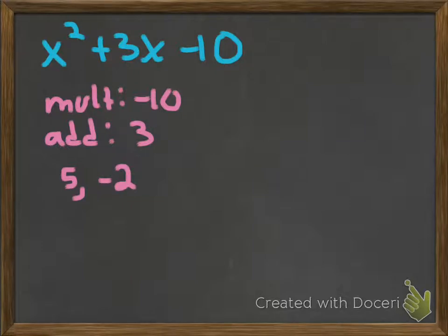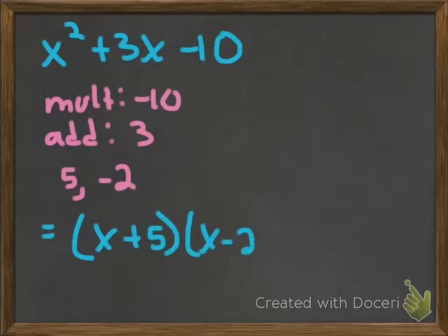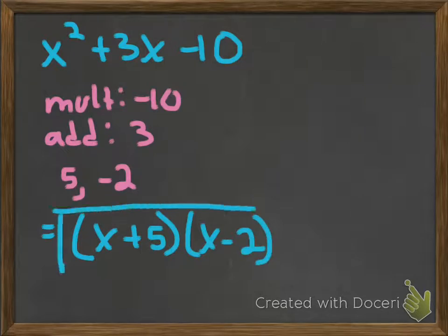It looks like 5 and negative 2 are the numbers that work in this example. They multiply to negative 10 and add to positive 3. So my factored version is x plus 5 times x minus 2. And again, to check your work, you would FOIL that out. I'll leave that for you guys to check your work.